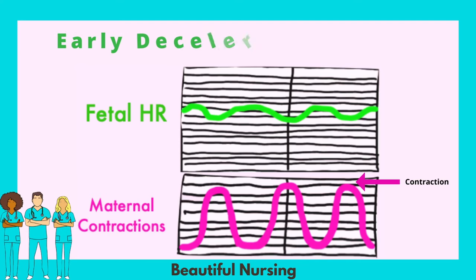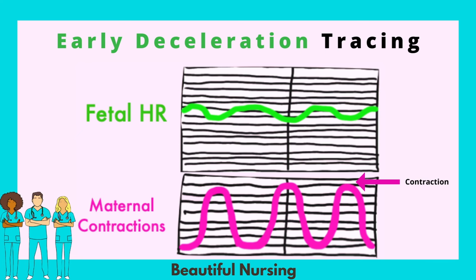Here is an example of an early deceleration fetal heart rate tracing. On the top, the green line is the fetal heart rate and the pink is the maternal contractions. Each time mom has a spike or contraction, the fetal heart rate lowers slightly, but as you can see, it bounces right back. With these early decelerations, there is no intervention needed.